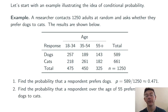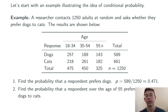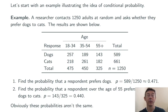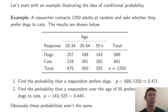Next, let's compute the probability that a respondent over the age of 55 prefers dogs to cats. We're looking at the column in this table labeled 55+. In this column, there are 143 adults that prefer dogs out of 325 total, so if we select someone at random from that column, the probability of getting someone that prefers dogs is 143 over 325, or .44.